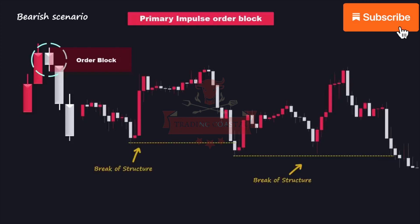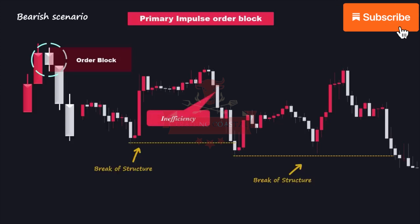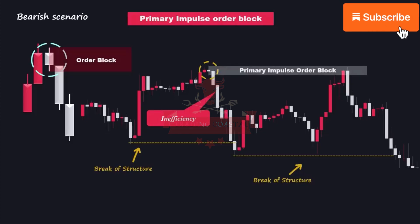Let's take a look at an example. In this chart, we have a downtrend where the price created a bearish break of structure by breaking below the previous lower low, leaving an inefficiency behind. To identify the most recent order block generated by the price, we can focus on the first weak bearish candle that formed before the significant downward movement. This candle represents the primary impulse order block, indicating a potential reversal or change in market direction, providing a high-probability trading opportunity.